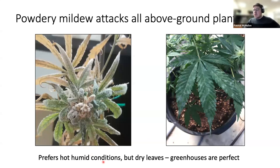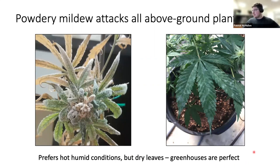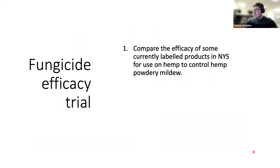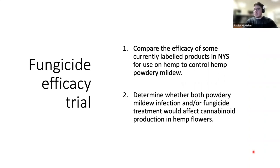Powdery mildew prefers hot, humid conditions but dry leaves. Unlike some pathogens that require leaf wetness to disperse, powdery mildew asexual spores will burst when they encounter water — so it likes high humidity but a dry leaf surface, making greenhouses a great spot for outbreaks. Our lab conducted fungicide efficacy trials to compare products currently labeled in New York State for hemp to control powdery mildew. We also wanted to know whether powdery mildew infection or fungicide treatment would affect cannabinoid production in hemp flowers.